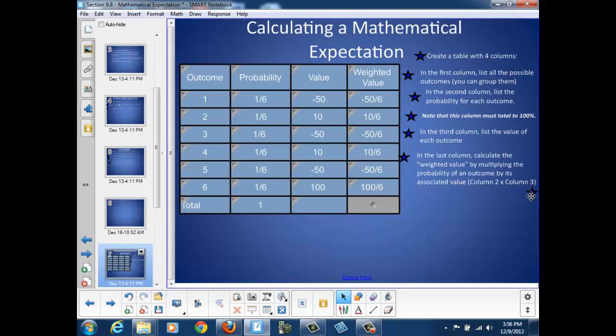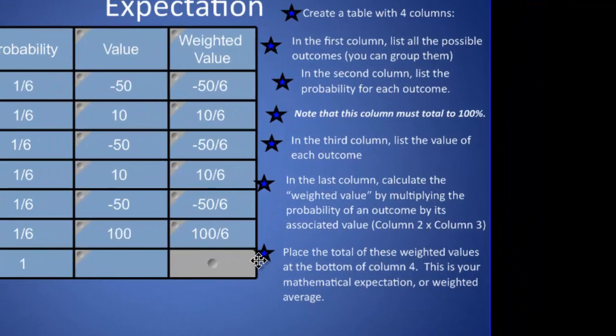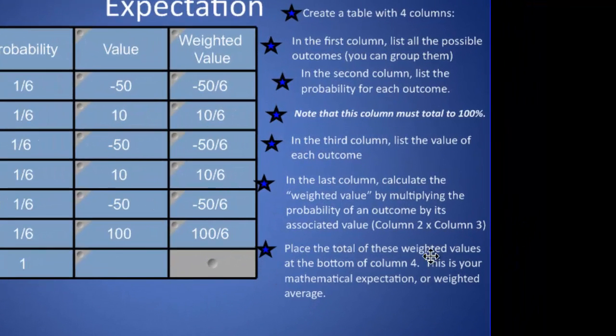Now that we have the weighted value for each possible outcome, we're going to place the total of these weighted values at the bottom of that fourth column. This is our mathematical expectation, or the weighted average.